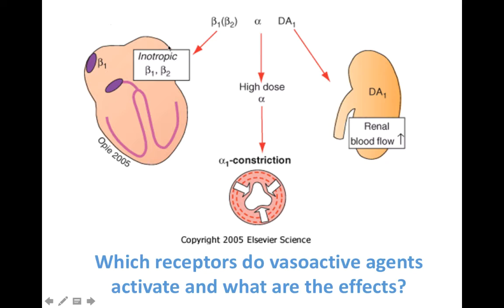Beta-1 mostly has inotropic effects, meaning it increases the contractility of the heart and makes it beat stronger. Heart rate can also increase. Beta-2 doesn't have a lot of direct activity on the heart itself — it's more of a vasodilatory effect in the bronchioles and in the vascular blood vessels. Alpha receptors, when stimulated, cause vasoconstriction, which helps increase blood pressure by increasing systemic vascular resistance. Dopamine-1 receptors mostly act on the kidneys and increase renal blood flow.